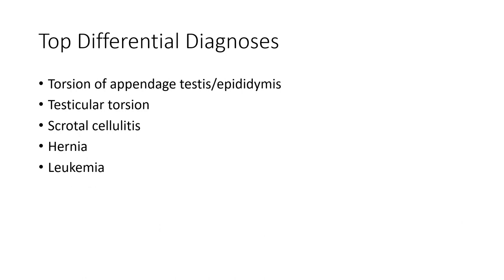Differential diagnosis includes: torsion of appendix testis, epididymitis, testicular torsion, scrotocele, inguinal hernia, and leukemia.